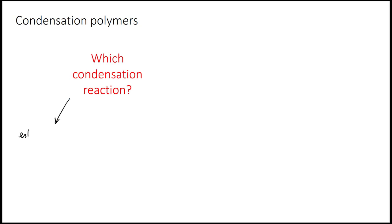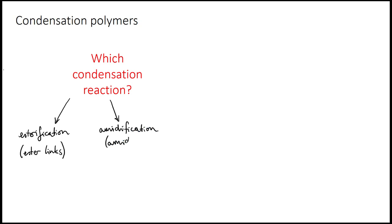Let me just summarise what we know so far. First, you can make condensation polymers using either amidification or esterification reactions. Second, like with addition polymerisation, you can make them either as homopolymers or copolymers.